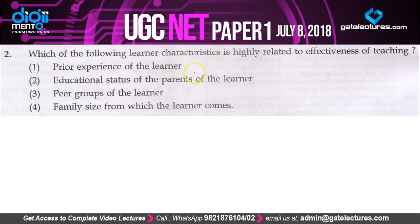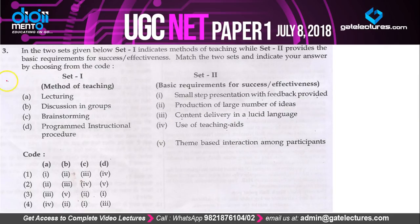Question 2: which of the following learner characteristics is highly related to effectiveness of teaching? Peer group, family size, or educational status of parents are not going to affect effectiveness of teaching. However, prior experience of the learner is going to make a difference. So the correct option is option 1.